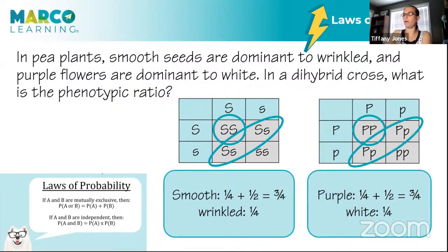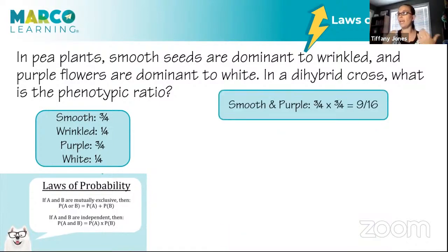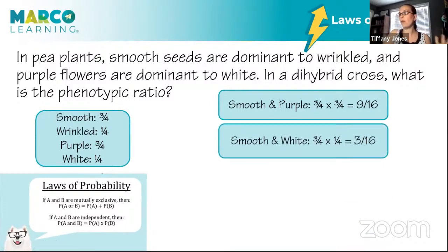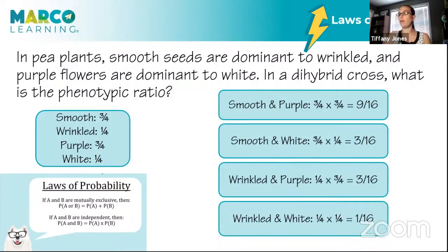The same thing for purple: one-fourth plus one-half gives three-fourths purple. Then we apply the multiplication rule: if A and B are independent events, multiply the probabilities. The smooth trait had no interaction with color, so we multiply the ratios separately. Three-fourths times three-fourths gives nine-sixteenths; three-fourths smooth times one-fourth white gives three-sixteenths; one-fourth wrinkled times three-fourths purple gives three-sixteenths; and one-fourth times one-fourth gives one-sixteenth. We just multiplied these independent ratios together.